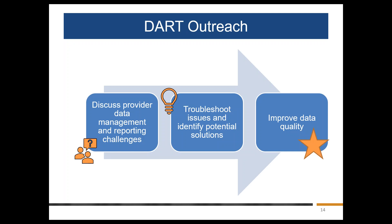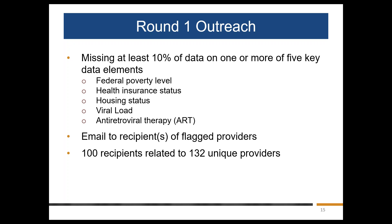As many of you know, the DART team works with recipients and subrecipients providers to improve RSR data quality. Part of that work includes annual targeted outreach to identify data quality issues, troubleshoot the problem, identify potential solutions, and then improve data quality in the next reporting season. We do two rounds of outreach every year. In the first round, we contact recipients with subrecipients with more than 10% missing data for key data elements, including federal poverty level, health insurance status, housing status, viral load, and antiretroviral therapy or ART.